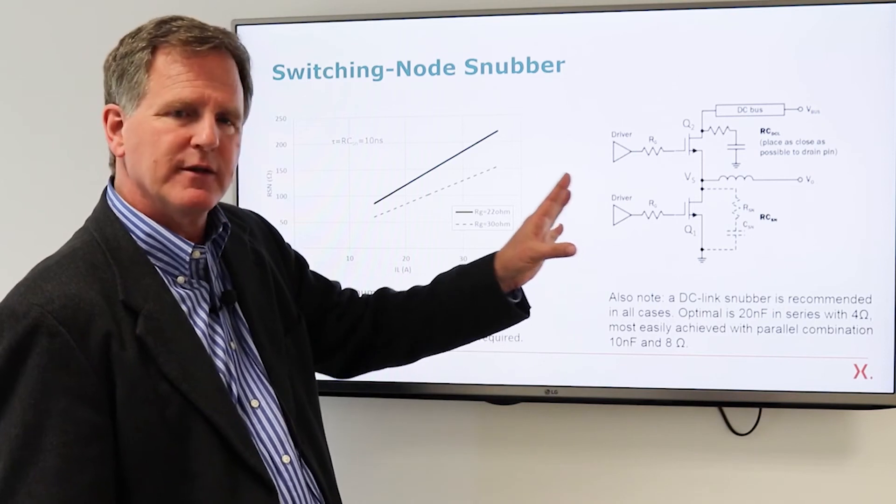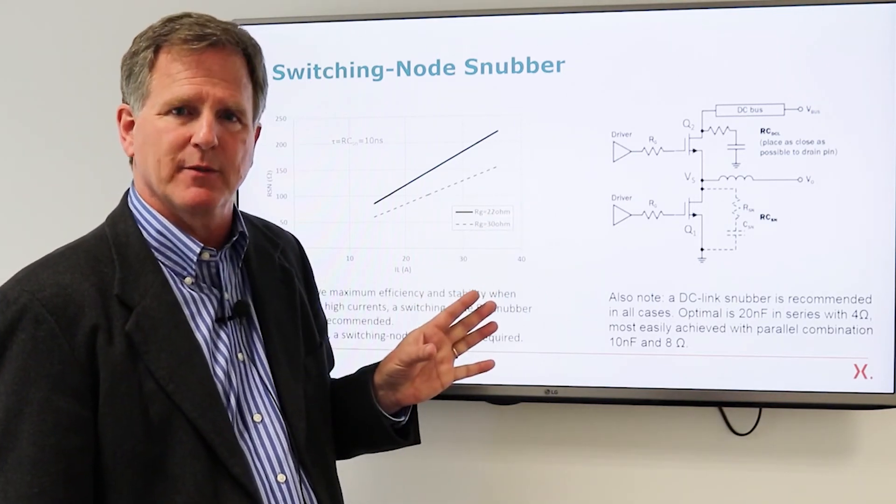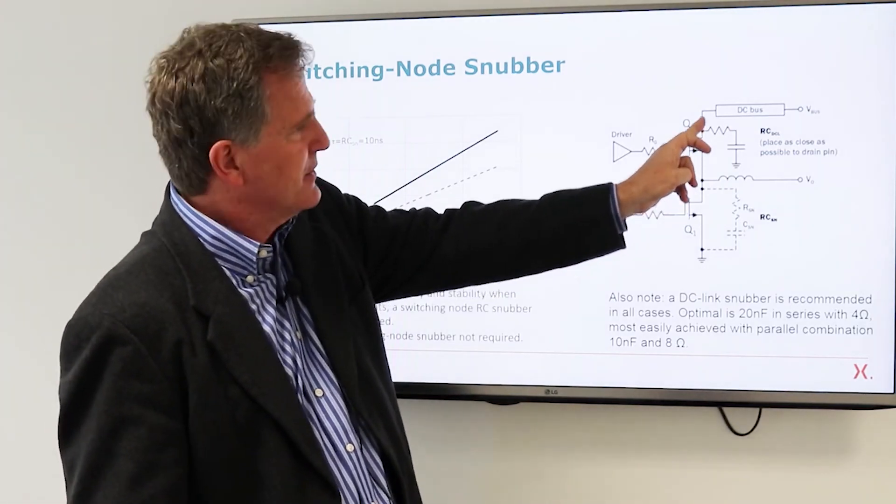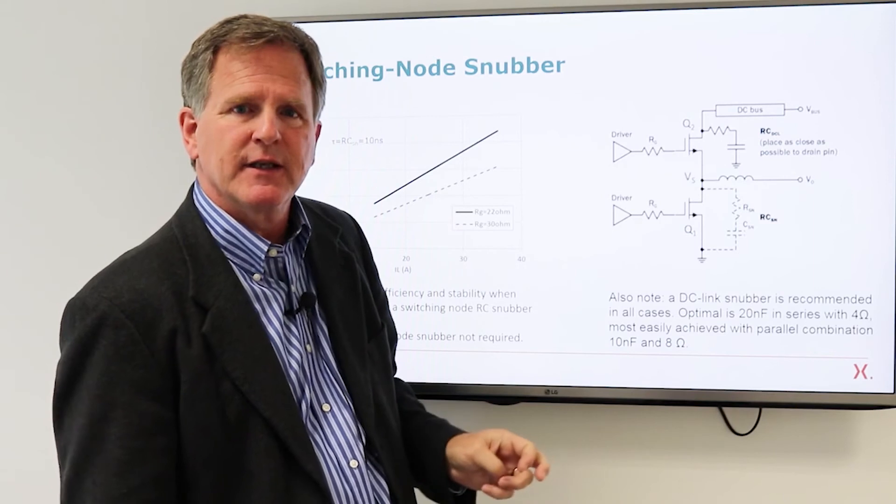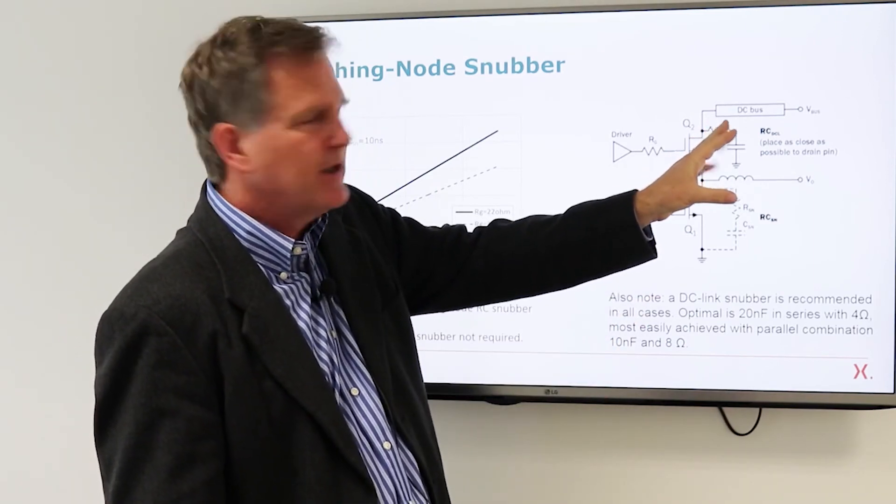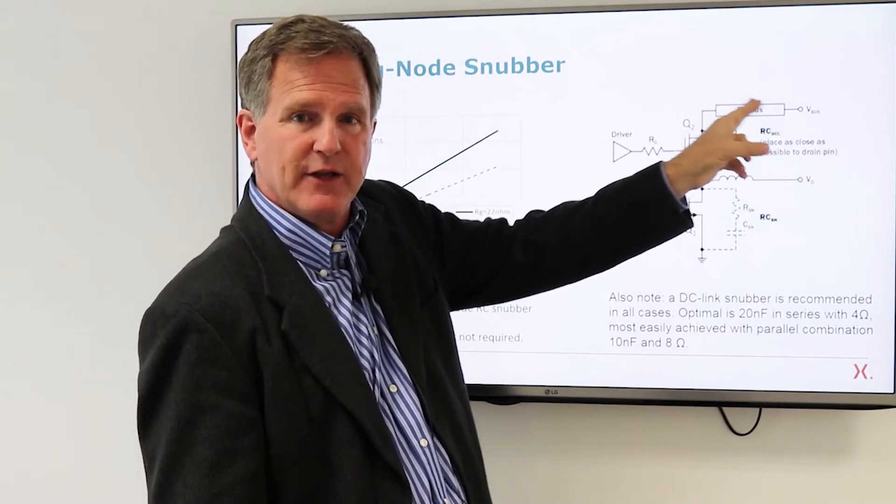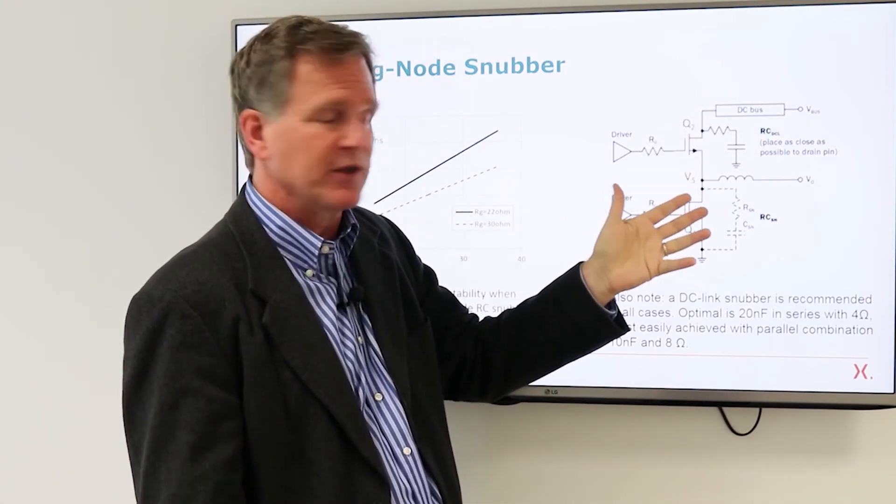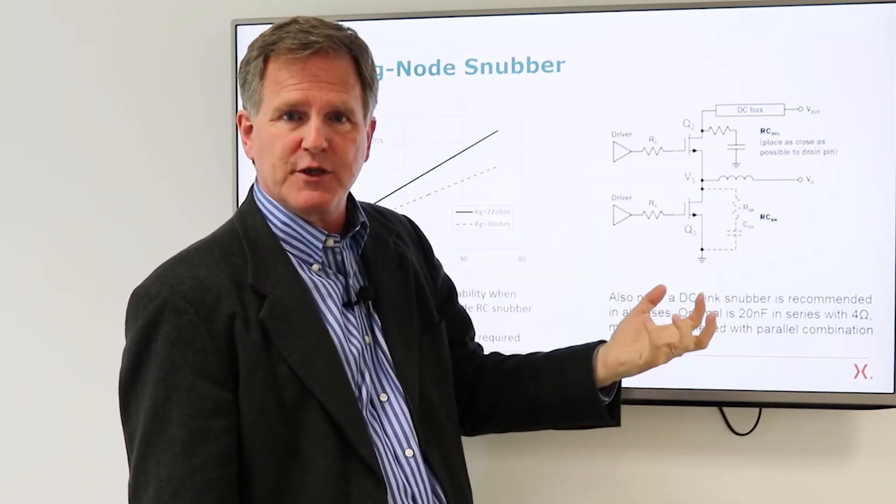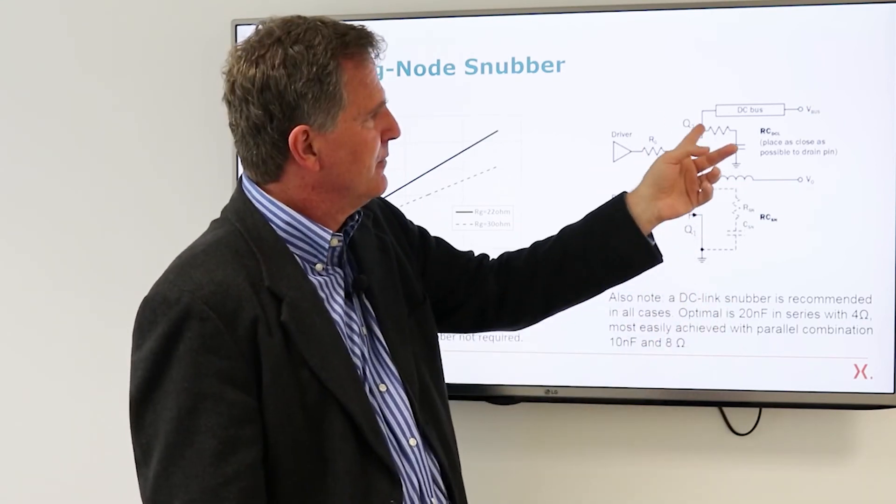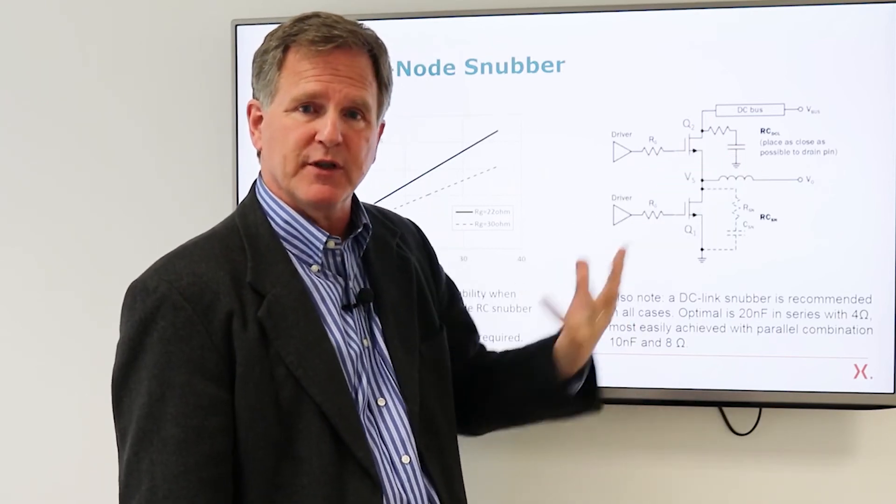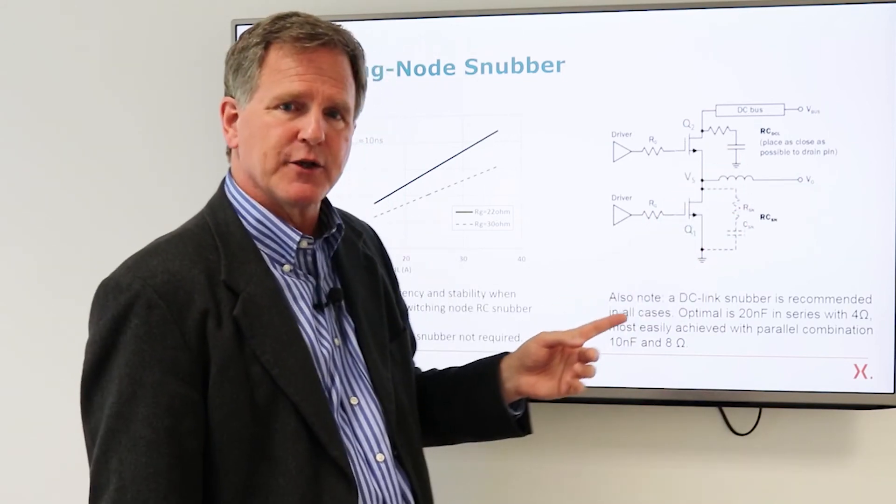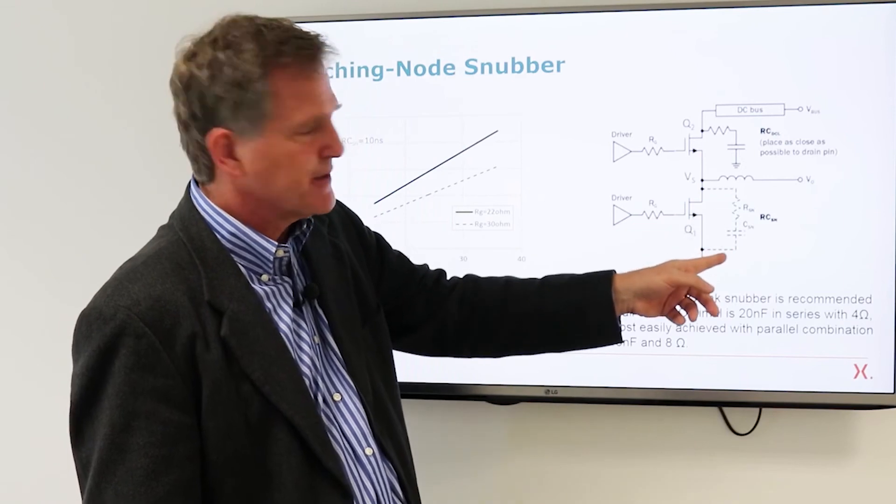One final point that we put on the data sheet is a recommendation for snubbers. The first one that we recommend in any case is an RC snubber at the DC link and what this does is lowers the quality factor of any resonance in the bus. That resonance will act as a load on the high gain amplifier can lead to instability. The snubber lowers the Q and dramatically improves the stability of the switching.